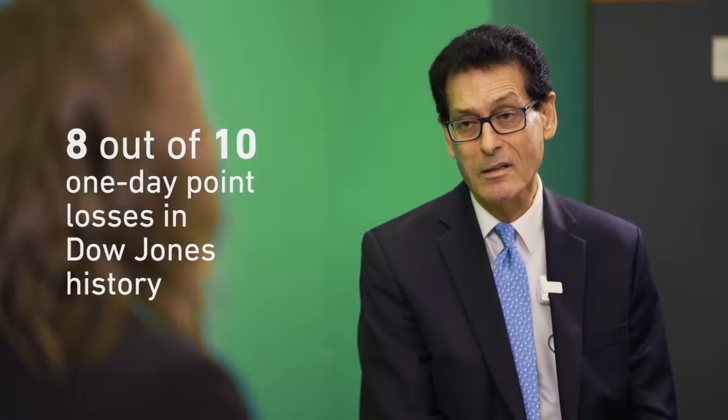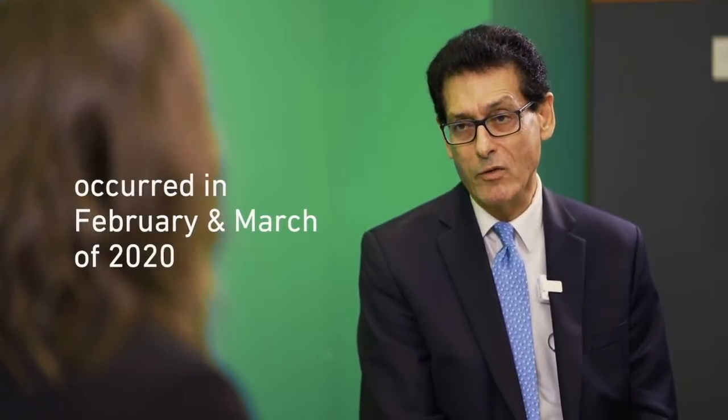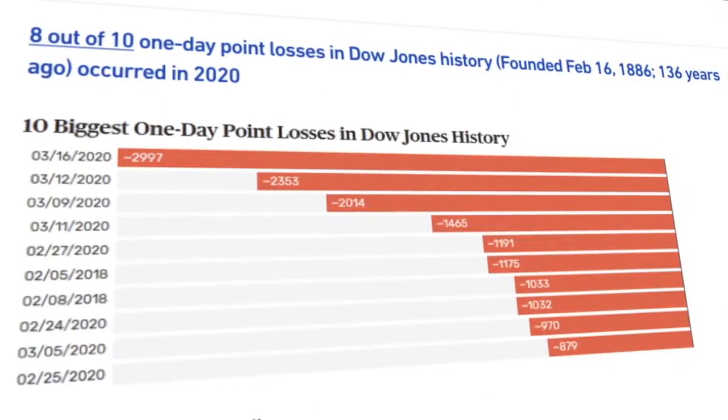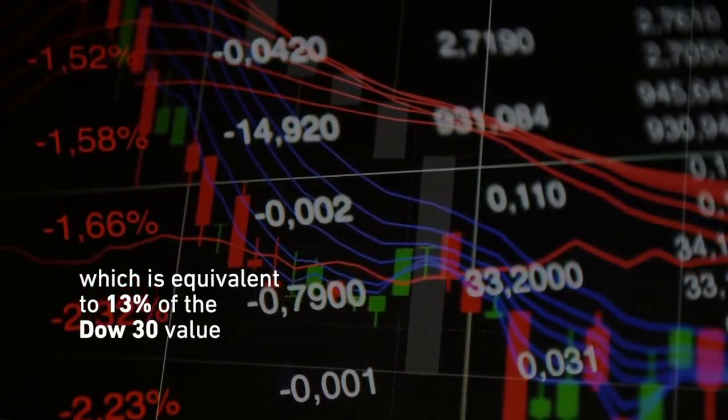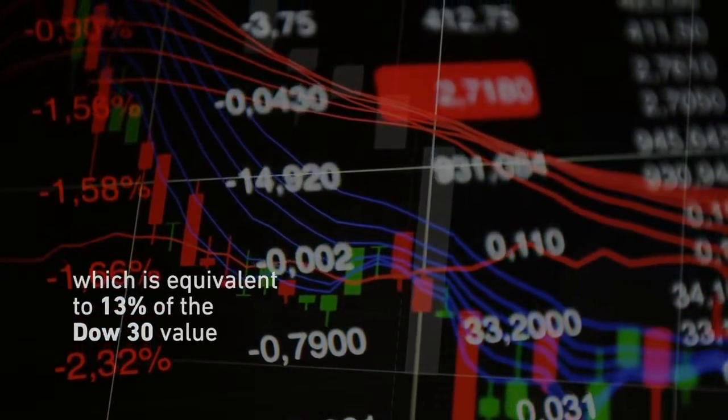As a matter of fact, eight out of ten of the largest one-day losses in the history of the stock market occurred in March and February of 2020, after the pandemic was declared global. In fact, on March 16th, the stock market went down by almost 3,000 points, which was about 13% of the value of the Dow 30.